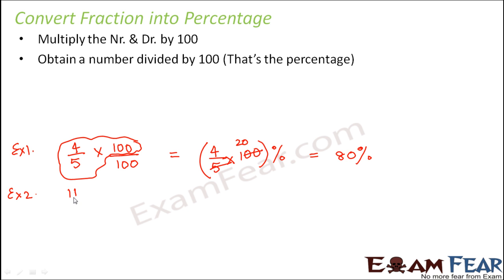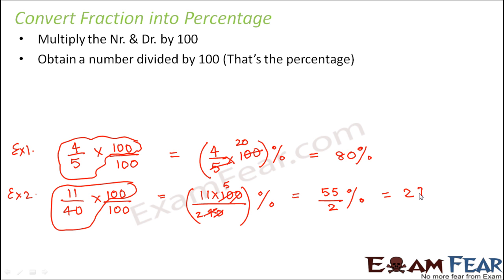Let's look at example 2. So here we have a fraction 11 by 40. What we do here also, we will multiply the numerator and the denominator by 100. You keep this entire thing intact, so it is 11 into 100 divided by 40 percent. So this 0 0 will cancel, this is 2 2 is a 4, 2 5 is a 5 10, so you get it as 55 divided by 2 percent. So 55 by 2 percent is nothing but 27.5 percent.